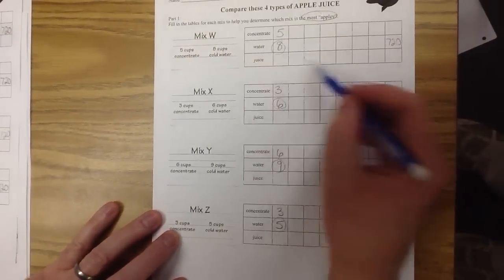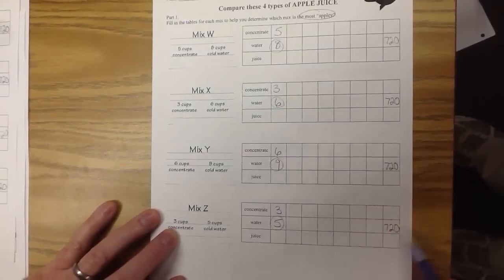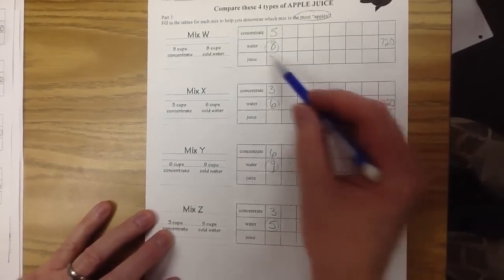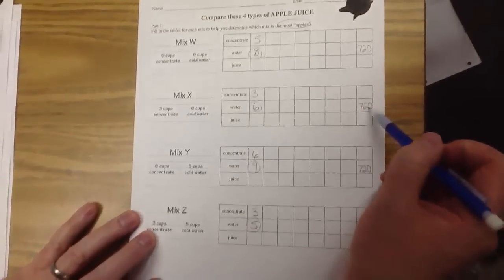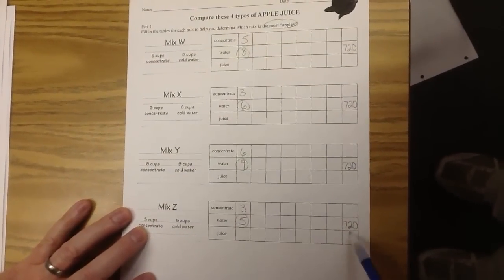Now, we can get the right answer by making all my cups of water up to 720, but that's a really big number coming from a pretty small number. So there's a lot of work involved to get from 8 to 720, 6 to 720, 9 to 720, or 5 to 720.